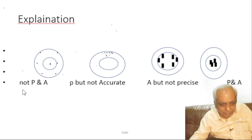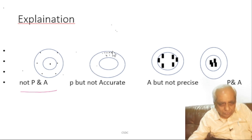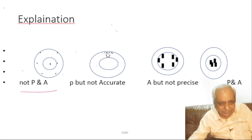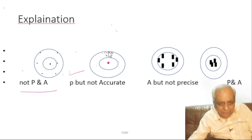He is neither precise nor accurate. Now for the second person, he has shot and you can see his arrows are coming only in this small region, so they are very precise. He is precise, but he is not accurate because I told him to shoot at the center point. So he is not accurate but he is precise.